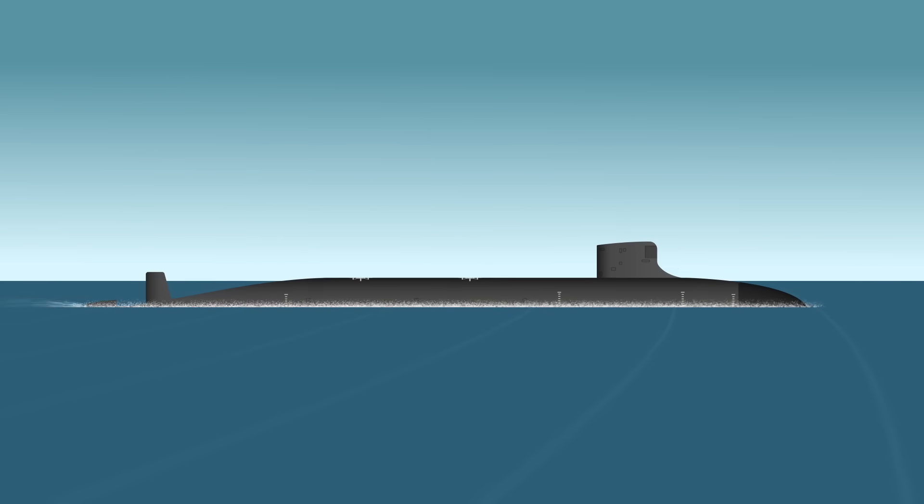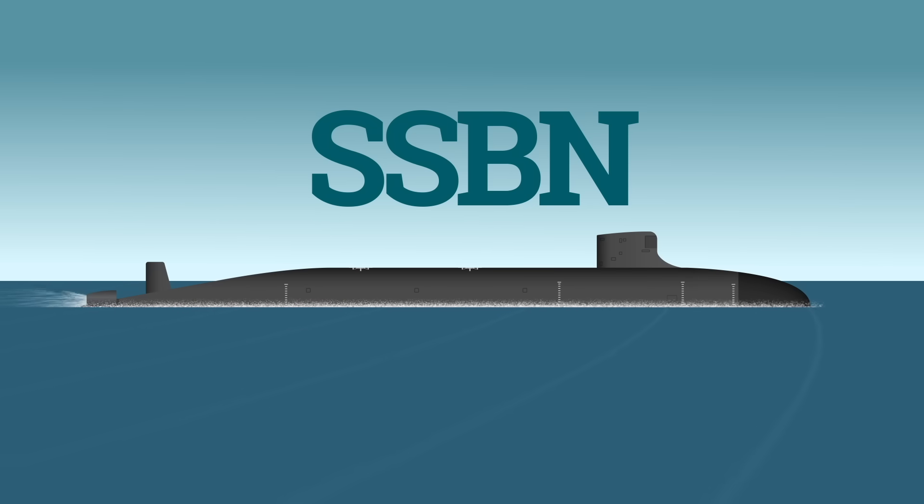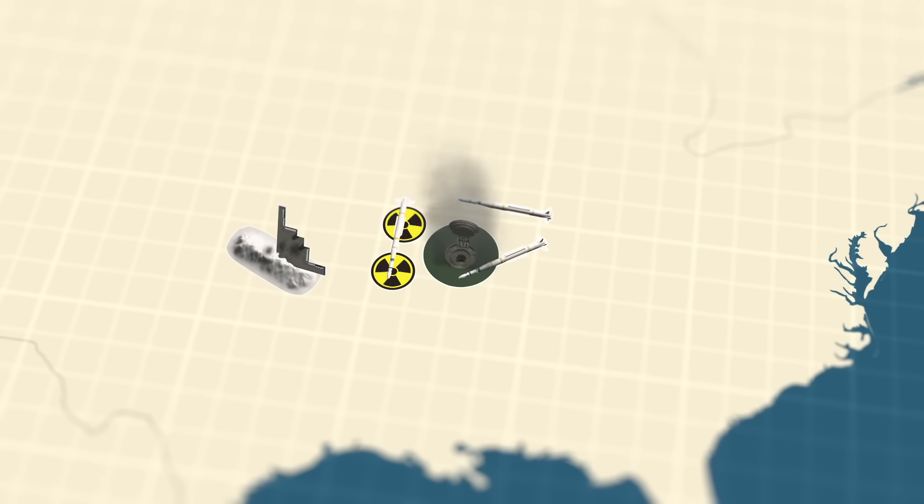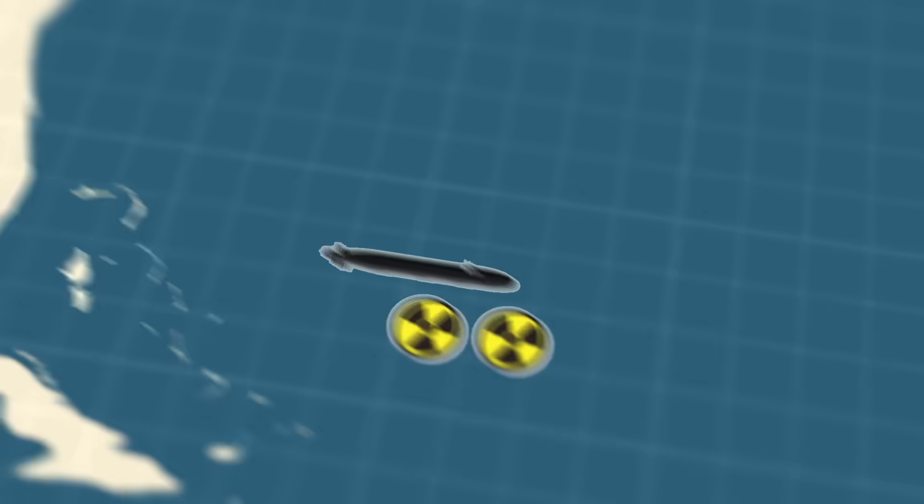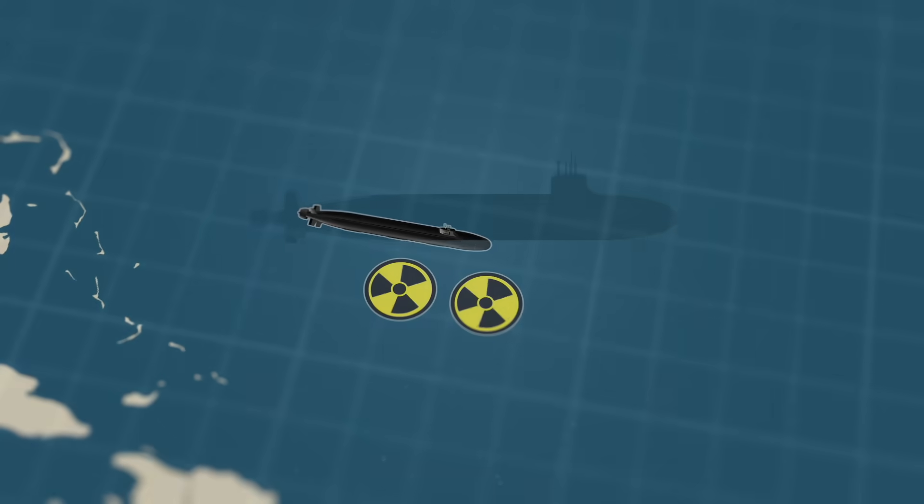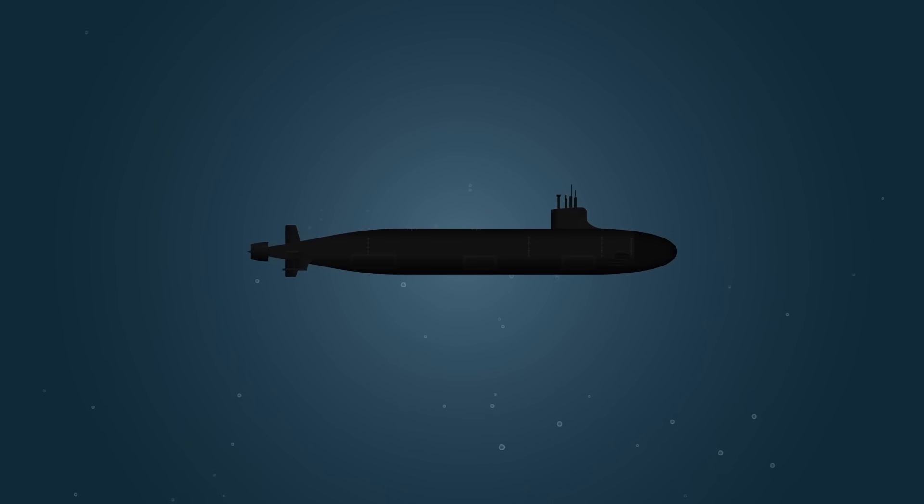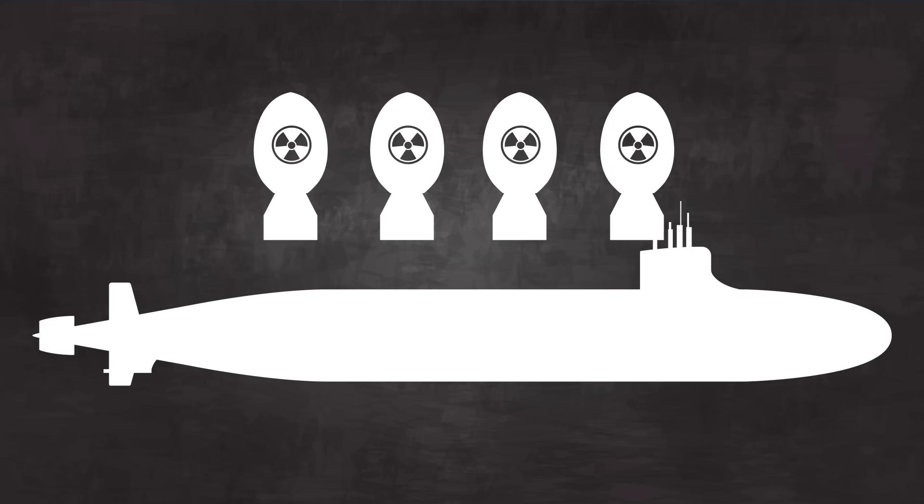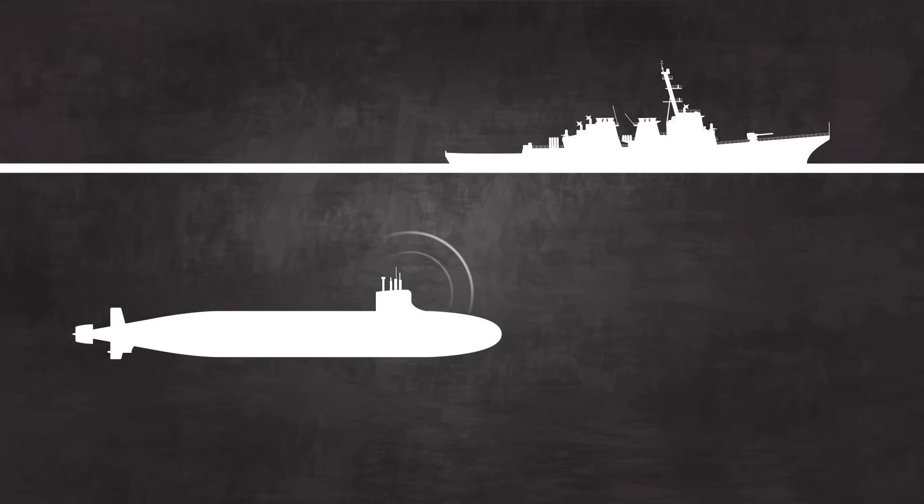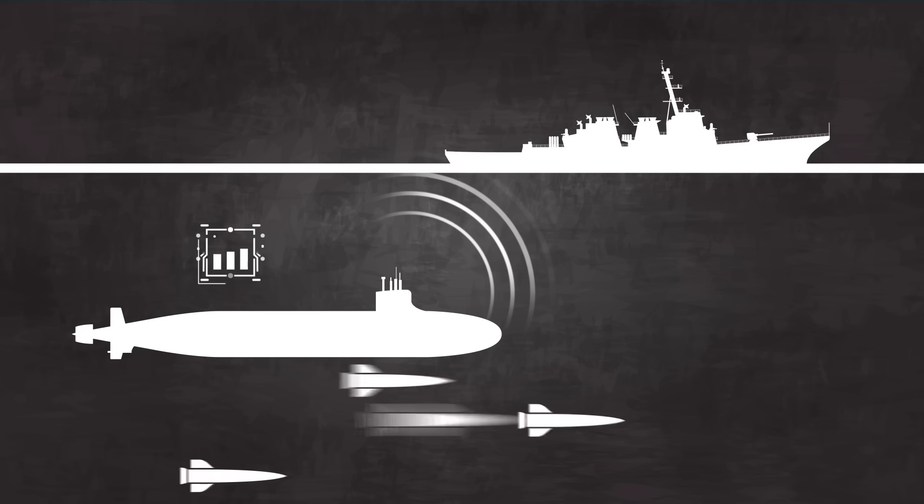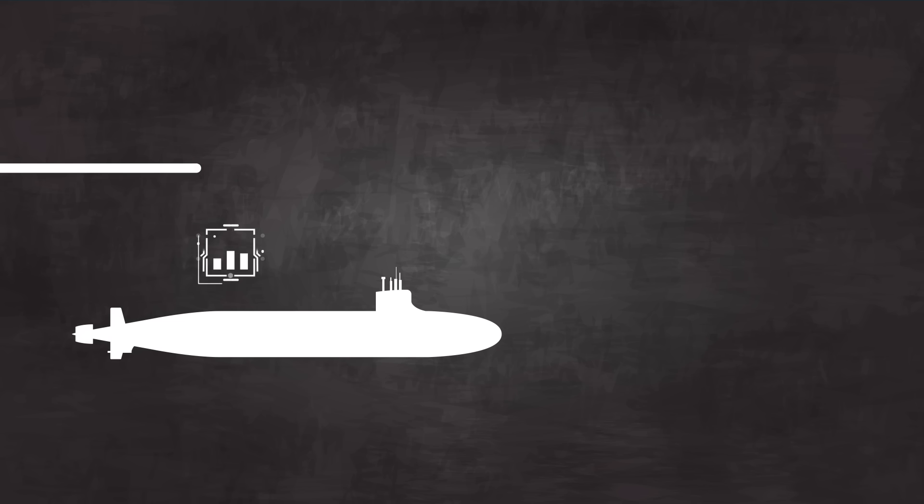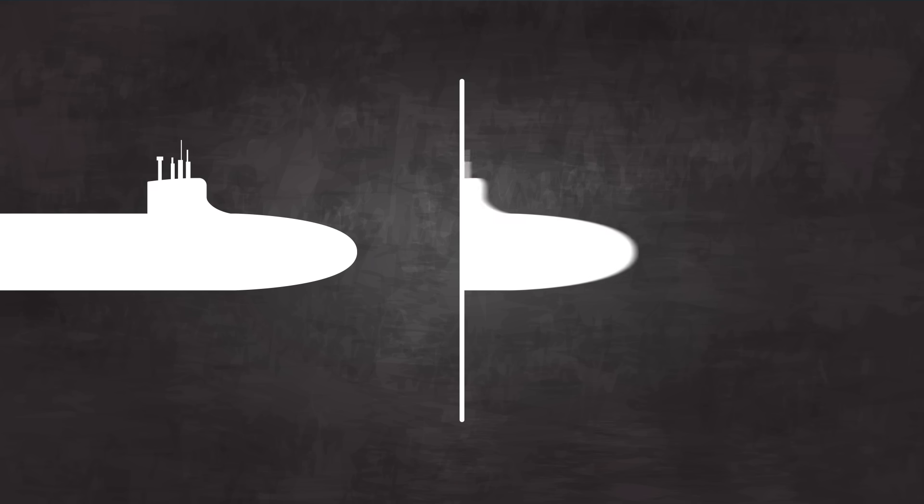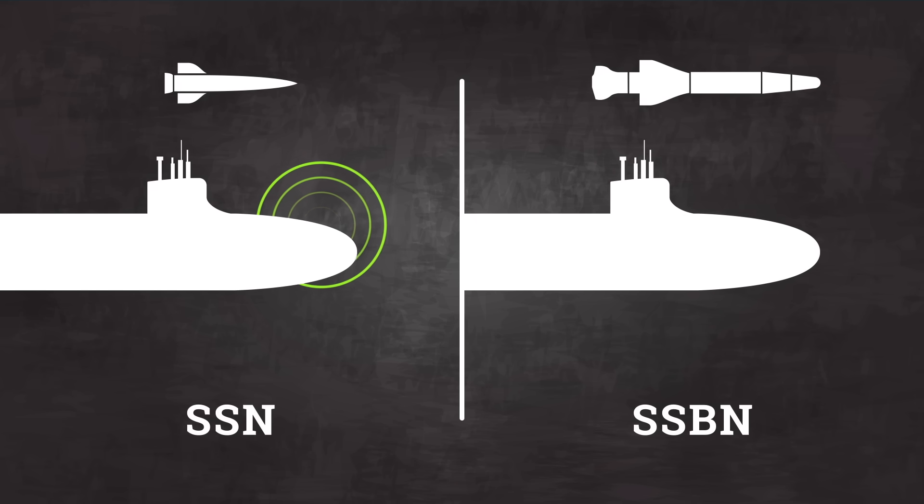That's why ballistic missile submarines, SSBNs, are considered the ultimate second-strike weapon. If everything else is destroyed in a surprise attack, a single hidden submarine can still respond. That possibility alone makes a first strike nearly unthinkable. But not all nuclear submarines are armed with nuclear weapons. Some, like attack submarines, are built for tracking enemy vessels, gathering intelligence, and launching cruise missiles. They use nuclear power for range and endurance, not for payload.